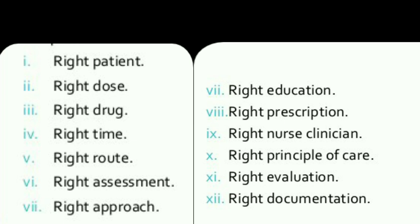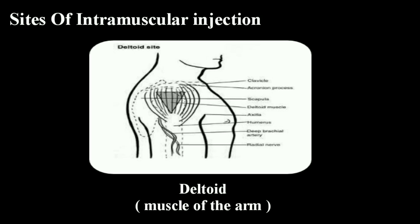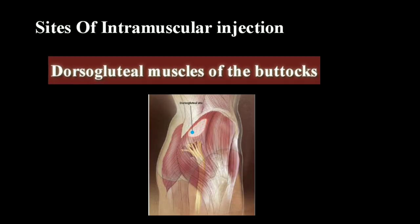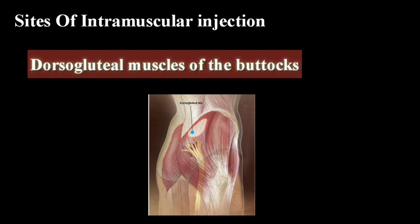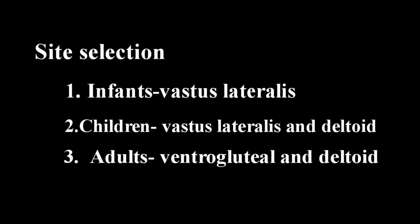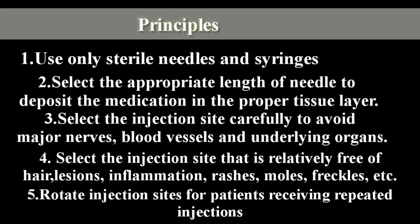The injection sites include the deltoid muscles — the muscles of the arm — the vastus lateralis muscles of the thigh, and the dorsogluteal muscles of the buttocks. The second site is the ventrogluteal muscles of the hip. For children, the vastus lateralis and deltoid muscles are used. The sterile needle length depends on the depth of the tissue.